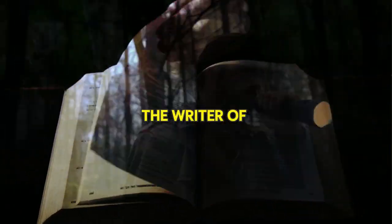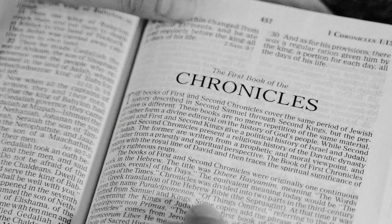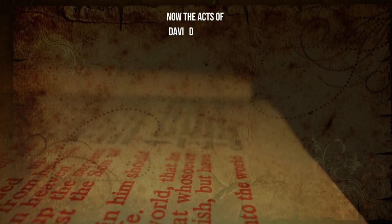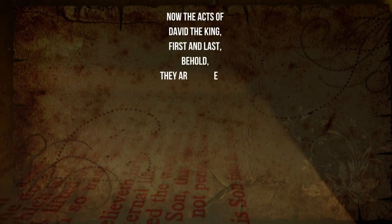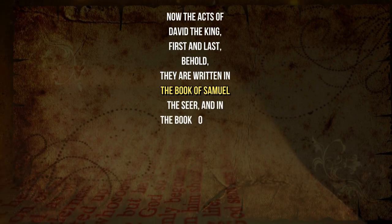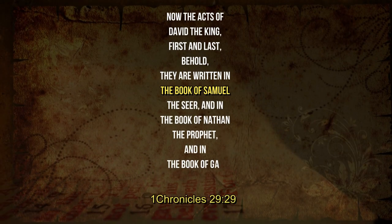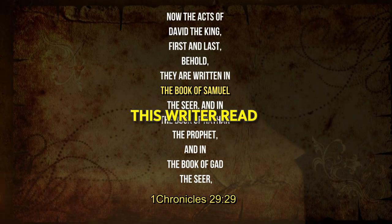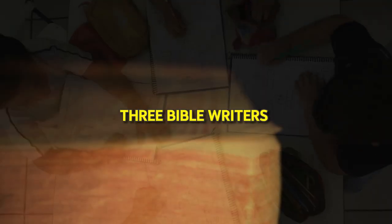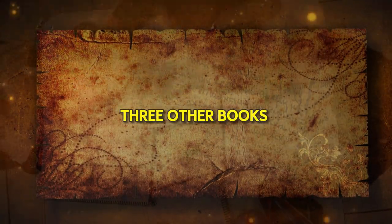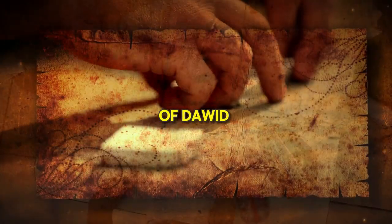The writer of the Book of Chronicles referenced the work of Samuel. The following is how the reference reads: 'Now the acts of David the king, first and last, behold, they are written in the book of Samuel the seer, and in the book of Nathan the prophet, and in the book of Gad the seer.' — 1 Chronicles 29 verse 29. This writer read the work of three Bible writers and recommends that his readers read those three books for a fuller coverage of the life and reign of King David.